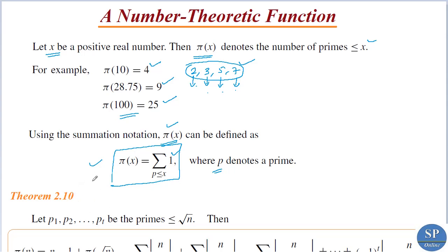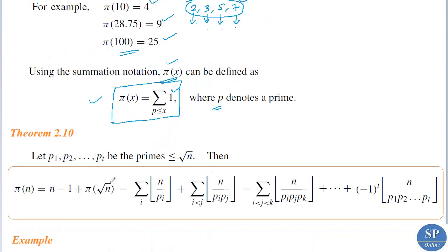We can discuss a formula for finding π(x). Theorem 2.10: Let p₁, p₂, …, pₜ be the primes less than or equal to √n. Then π(n) = (n − 1) + π(√n) − Σᵢ ⌊n/pᵢ⌋ + Σᵢ<ⱼ ⌊n/(pᵢpⱼ)⌋ − Σᵢ<ⱼ<ₖ ⌊n/(pᵢpⱼpₖ)⌋ + … + (−1)ᵗ ⌊n/(p₁p₂…pₜ)⌋. The proof of this theorem is complicated, so we omit it.